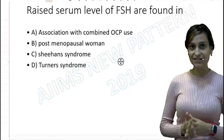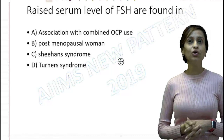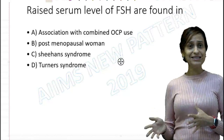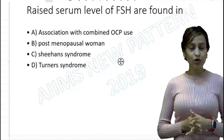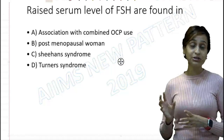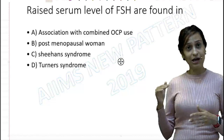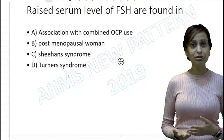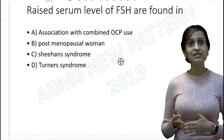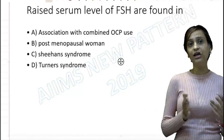Option C says Sheehan's syndrome, where we know it is a pituitary infarction that typically occurs in women who have undergone massive postpartum hemorrhage. The blood supply to the anterior pituitary is not maintained, so all the hormones produced by the anterior pituitary are going to be absent or low. Therefore, the FSH levels are going to be low in Sheehan syndrome — not high. So option C is also incorrect.